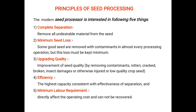Upgrading quality means improvement of seed quality by removing contaminants, rotten, cracked, broken, insect-damaged, or otherwise injured or low-quality crop. Efficiency refers to the highest capacity consistent with the effectiveness of the separation. Minimum labor requirement directly affects the operating cost and is associated with direct cost.